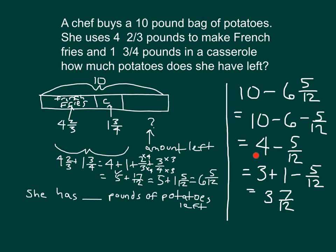Be careful here with four minus five-twelfths. I have seen many people suggest that amount is still more than four, which does not work. You see here that seven-twelfths is more than five-twelfths, and the whole number is one smaller as well. So that's three and seven-twelfths pounds of potatoes left, and I am writing it within my answer, expressing that answer clearly.